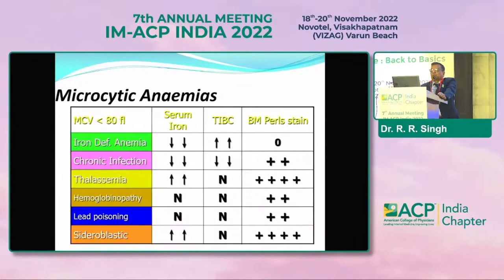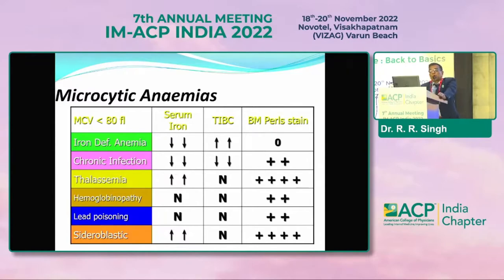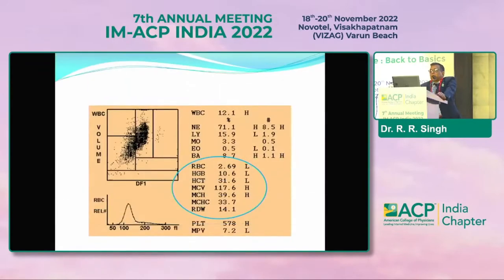In microcytic hypochromic anemia, we have to differentiate using other investigations like serum iron, total iron binding capacity, and bone marrow Pearl stain. In iron deficiency, serum iron level is low. In sideroblastic anemia, the serum iron load is too high, which we also find in thalassemia. In chronic infection, iron also goes down. In iron deficiency anemia specifically, bone marrow Pearl stain is negative — the value is zero.